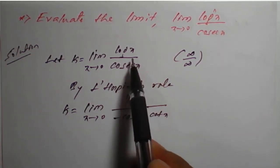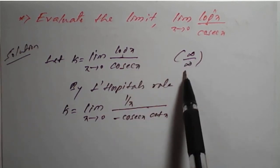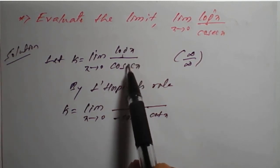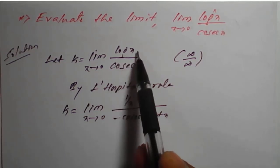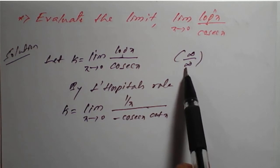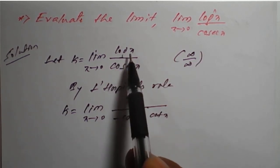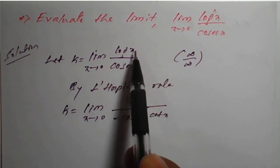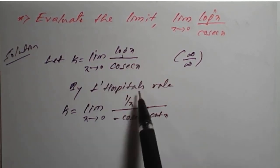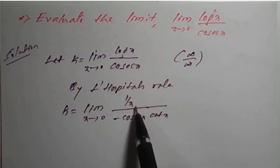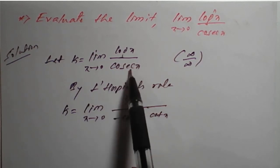However, as per one remark, if it is an infinity by infinity form, we can rewrite it as 1 upon cosecant x divided by 1 upon log x. On simplification it will be log x upon cosecant x again, but we can convert this infinity by infinity form into a 0 by 0 form by taking 1 upon cosecant x divided by 1 upon log x, which will be a 0 by 0 form.